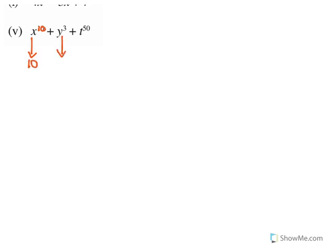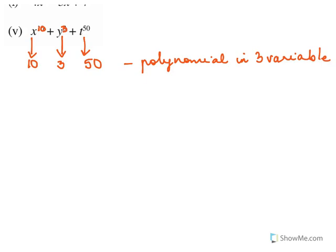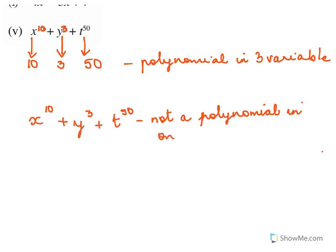Now let's check the next expression. The power of x is 10, the power of y is 3, and the power of t is 50. It is a polynomial, but not in one variable — it is in three variables. We want a polynomial in one variable, so this does not satisfy the condition. This is a polynomial in three variables, so it is not a polynomial in one variable.